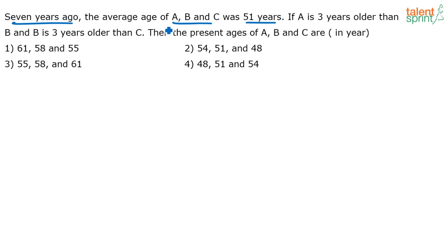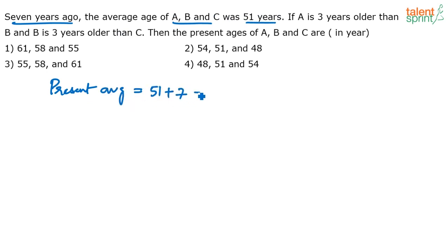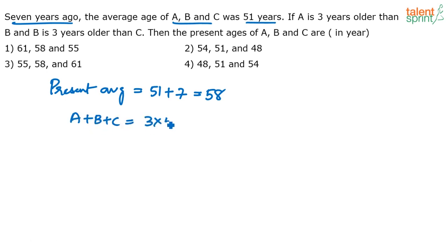From 7 years ago to the present, all of A, B and C have increased by 7. If all have increased by 7, the average also increases by 7. So the present average will be 51 plus 7, which is 58. An average of 58 means A plus B plus C will be three times 58 — that's 174.